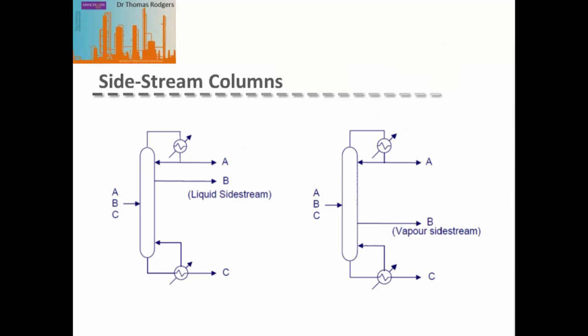If either the most volatile or the least volatile component is only a minor fraction of our feed, then instead of having a side column, we can just take a side stream off our column. If A, our most volatile component, is the minor component, we can have a side stream towards the top of the column to take off our second most volatile component B as a liquid, because A remains mainly as vapour at that stage. If C, our least volatile component, is the minor component, we take a side stream off component B below our feed as a vapour, because C would mainly be a liquid at that stage.